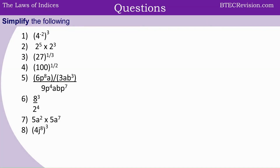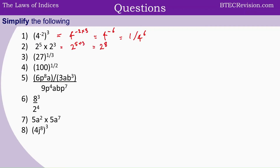Pause the video here and answer these questions. Let's look at the answers. Question 1: that is 4 to the power of negative 2 times 3, which is equal to 4 to the power of negative 6. We can simplify that further as 1 over 4 to the power of 6. Question 2: that is 2 to the power of 5 plus 3, which is 2 to the power of 8.